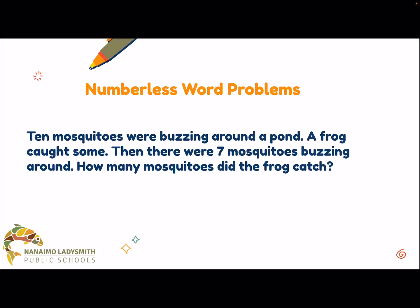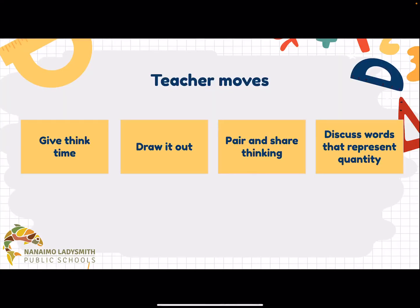We can start with something like this, pare it back, and slowly reveal the question to students, adding more information as we go. Some teacher moves as you work through this: really make sure you give students time to think, allow them to draw it out, get them into the habit of creating an image about what might be happening. Get them to pair together, share their thinking, and discuss words that represent quantity — so students understand it doesn't always have to be add, subtract, or put together. Make sure they understand that different words can represent quantity.